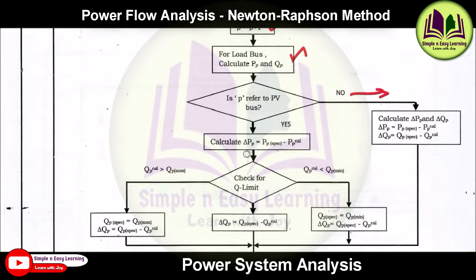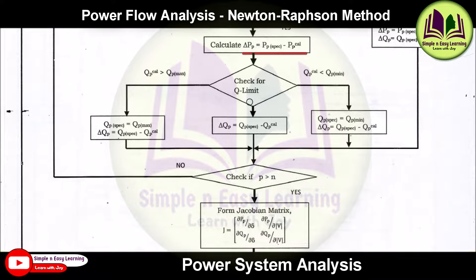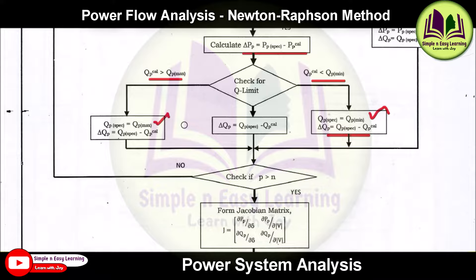For a generator bus, calculate delta_Pp alone using Pp_specified - Pp_calculated, then check the reactive power Q limit. If Qp is less than Q_min, set Qp = Q_min and calculate delta_Qp. If Qp is greater than Q_max, set Qp = Q_max and calculate delta_Qp using the same formula.